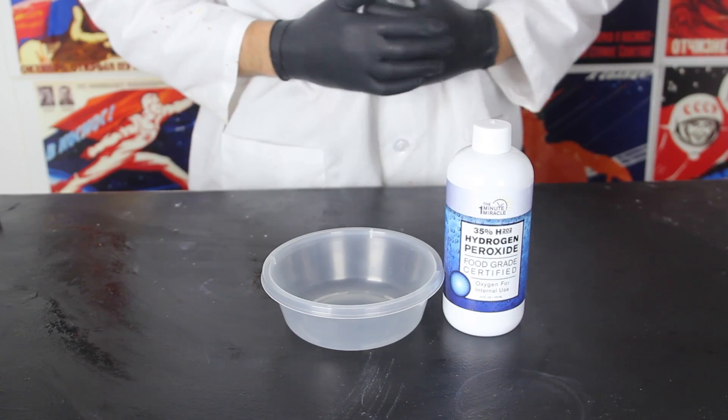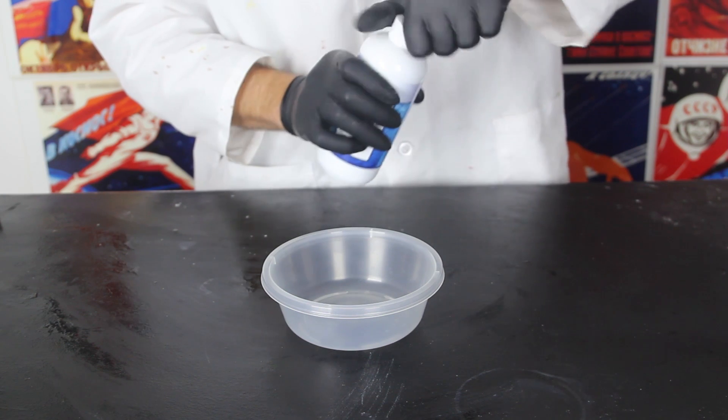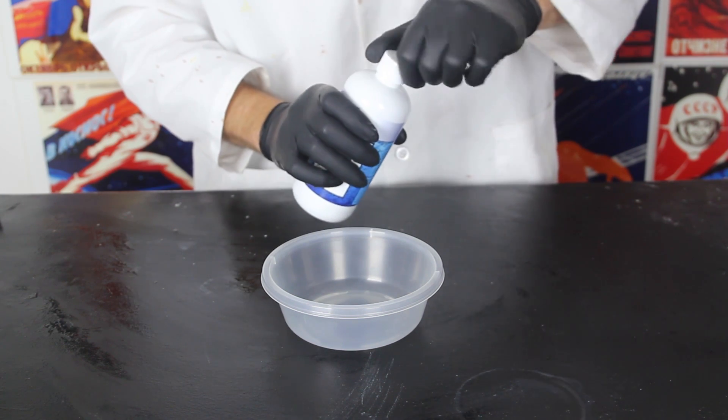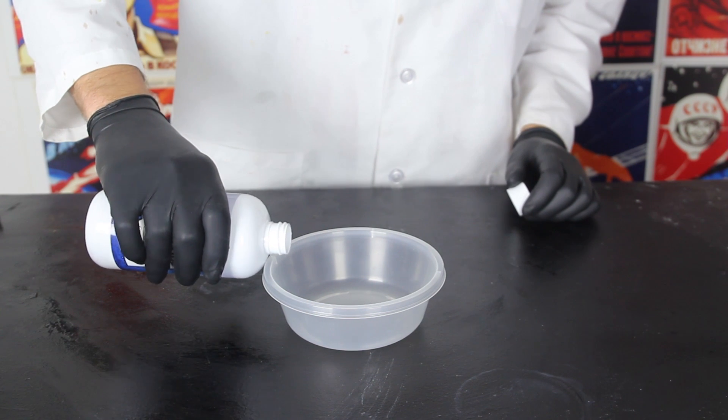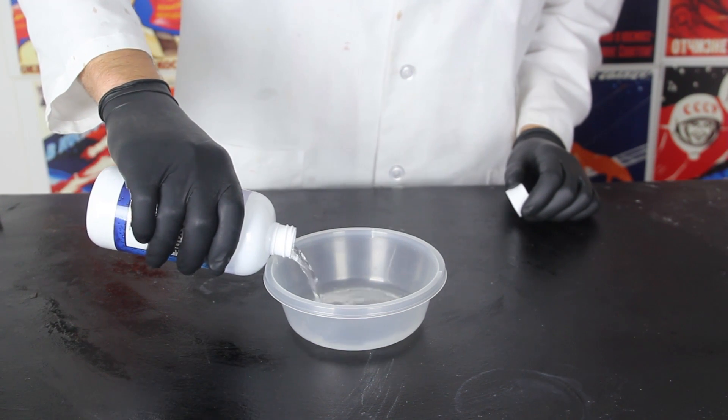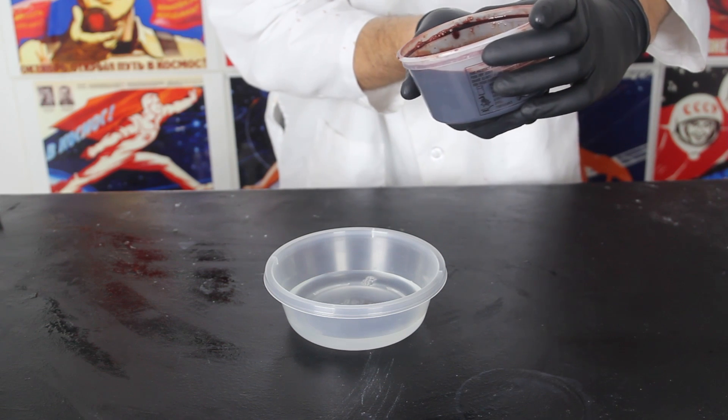For this one I got something even more epic. I got 35% hydrogen peroxide and let's see what happens if we mix it with pork blood. So I'm gonna first put hydrogen peroxide in the bottom and now I'm gonna grab pork blood and drop it in there.